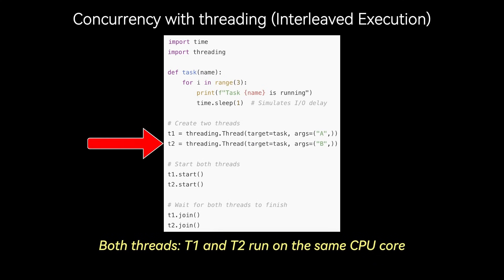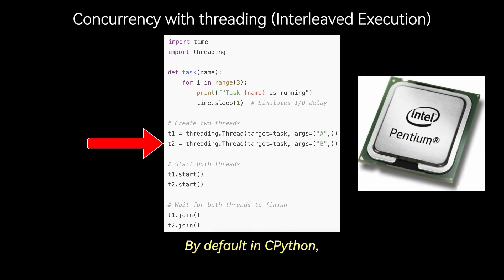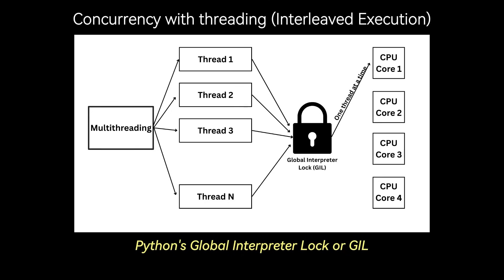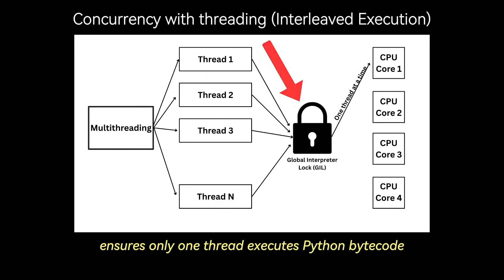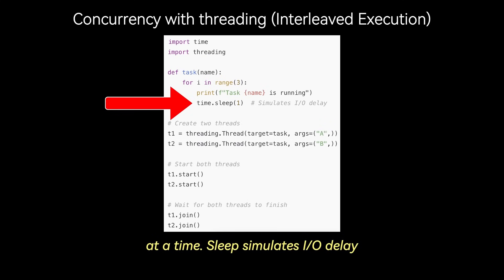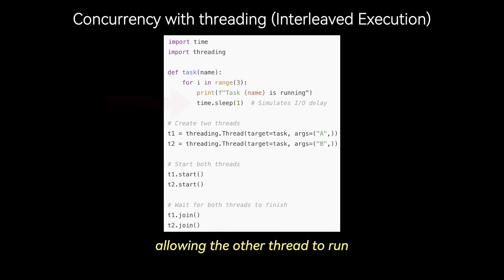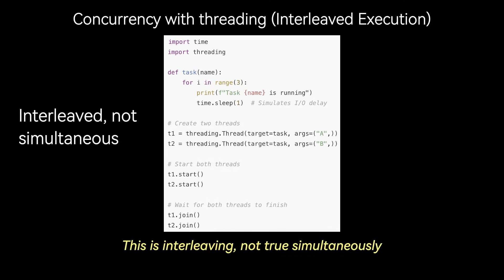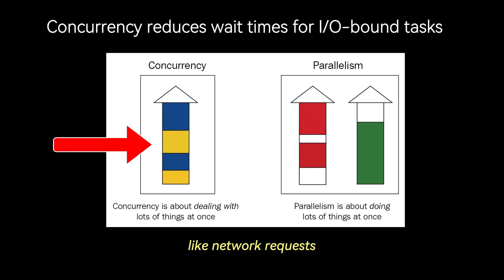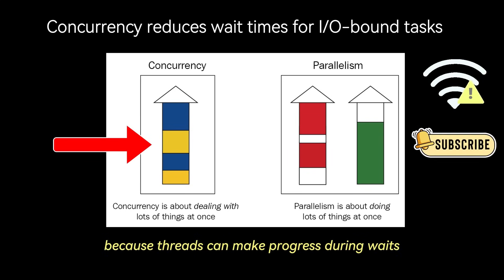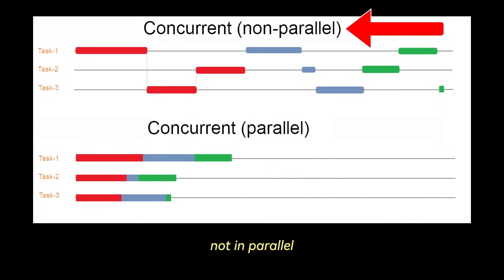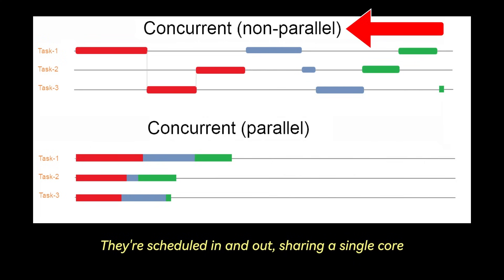Both threads T1 and T2 run on the same CPU core by default in CPython. Python's Global Interpreter Lock, or GIL, ensures only one thread executes Python bytecode at a time. time.sleep simulates I/O delay — when time.sleep is called, the active thread yields the CPU, allowing the other thread to run. This is interleaving, not true simultaneity. This is efficient for I/O-bound tasks like network requests because threads can make progress during waits. Remember, these tasks run concurrently, not in parallel — they're scheduled in and out, sharing a single core.